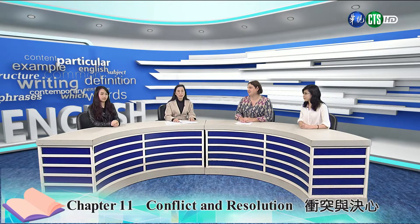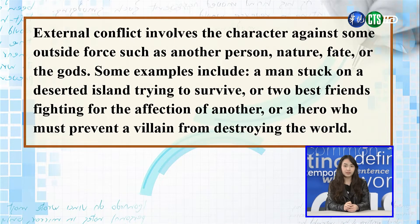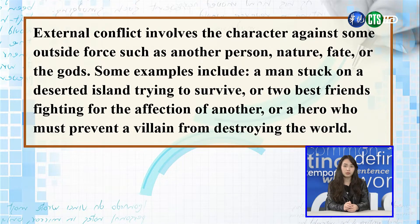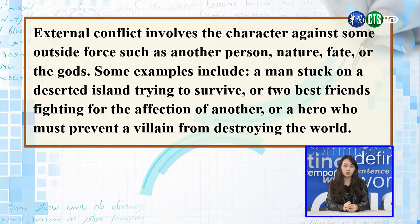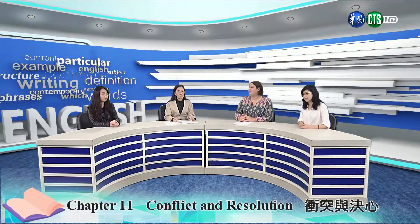And Tiffany, what is an external conflict? External conflict involves the character against some outside force such as another person, nature, fate or the gods. Some examples include a man stuck on a deserted island trying to survive, or two best friends fighting for the affection of another, or a hero who must prevent a villain from destroying the world. 外部冲突涉及角色对抗某种外部力量，例如对抗另一个人、自然、命运或是神灵。